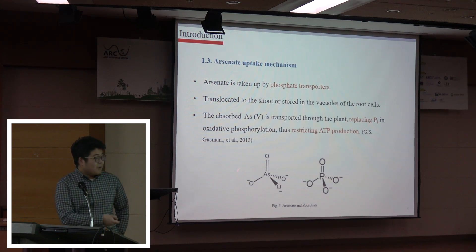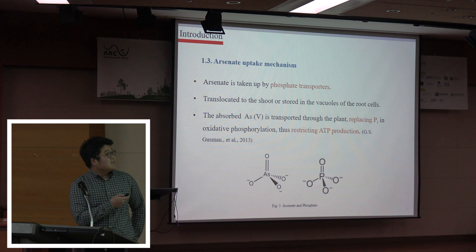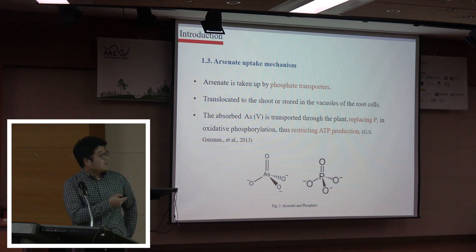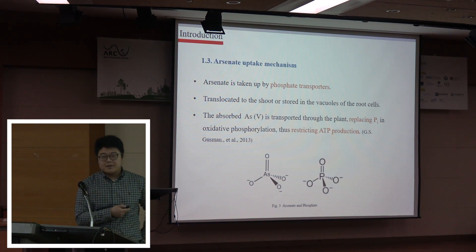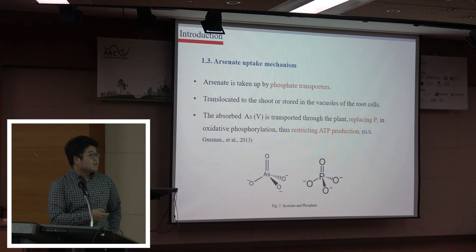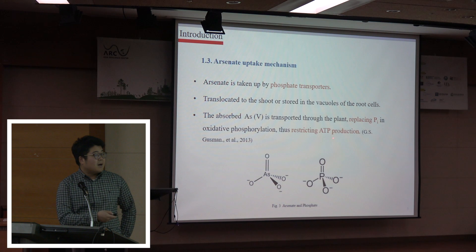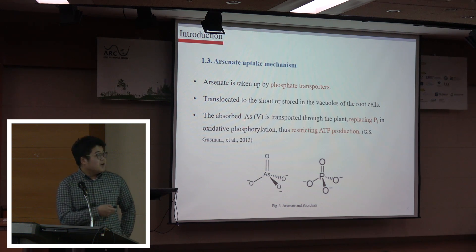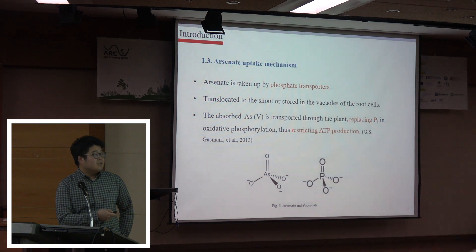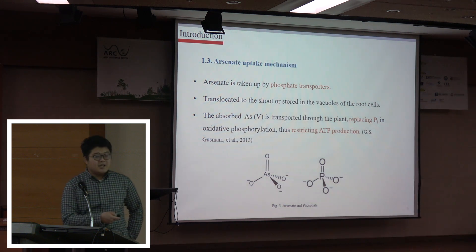With this structural similarity, arsenic can use the same transporter as phosphate and accumulate in the same place. Because phosphate is the main factor in ATP composition, during ATP production, arsenic can replace phosphate and restrict ATP production.